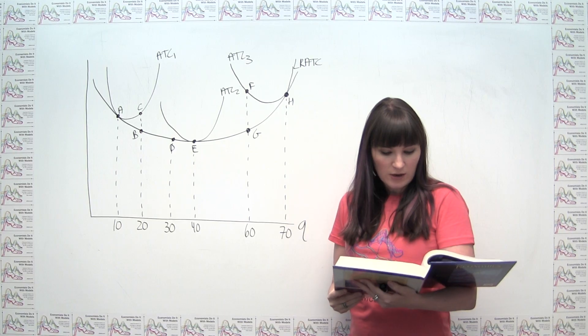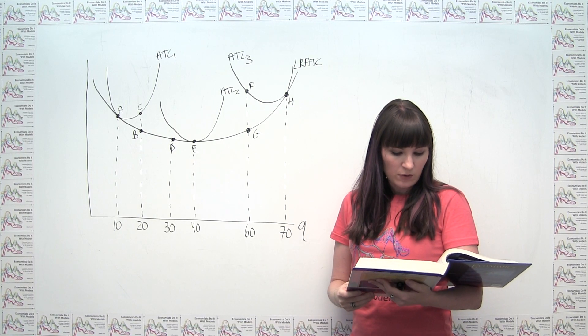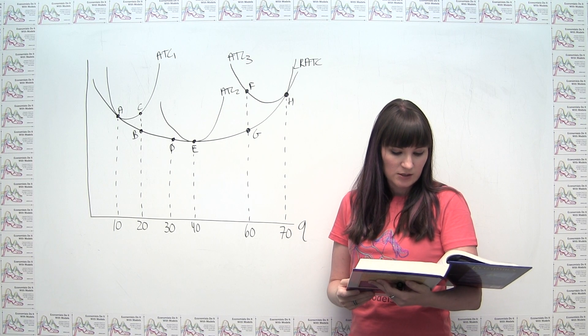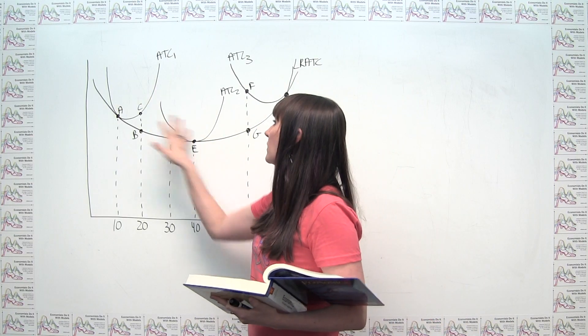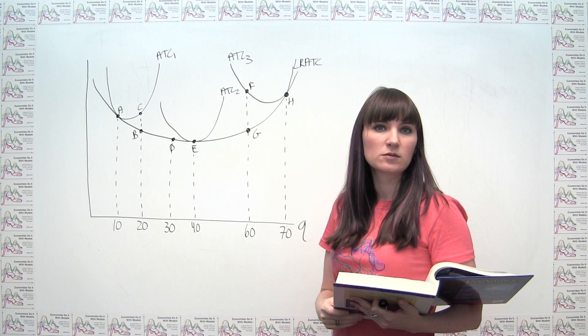So part A of the question says, what point will likely illustrate Ludmilla's cost situation for the near future? So let's think about what this all represents.